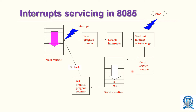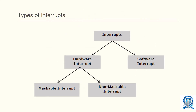The service routine is then executed. Once the service routine is executed successfully, it returns back to the main program. Once the service is given, it also provides an acknowledgement. These are the types of interrupts.